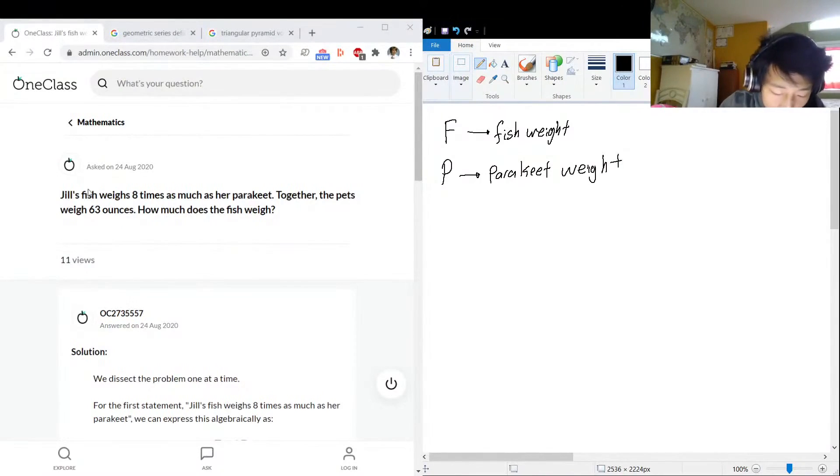We know that the fish is eight times heavier than the parakeet. So fish weight is equal to—the fish weighs eight times more than a parakeet, so eight parakeets are going to be one fish in weight. We're not going to think about the biology, this is a big fish. So the fish is eight times heavier than the parakeet, the parakeet's weight times eight, that's the fish weight.